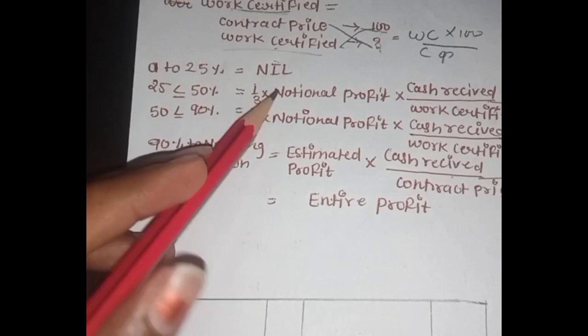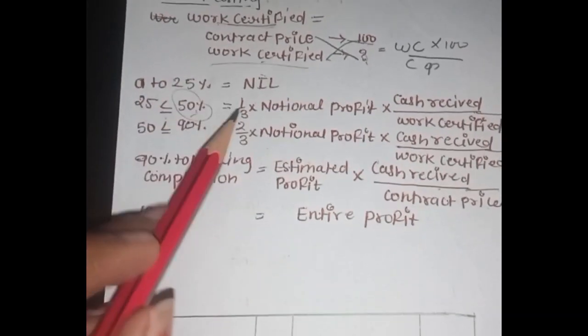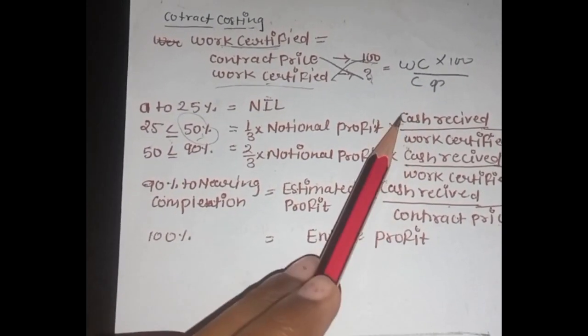If it is 0 to 25%, up to 25%, it is 1/3 notional profit into cash received upon work certified. CEW.